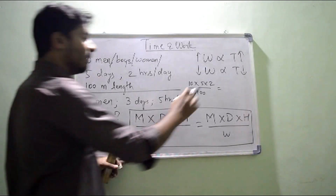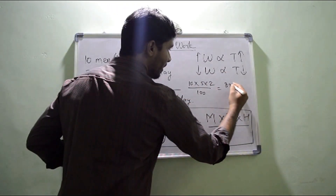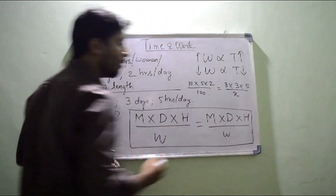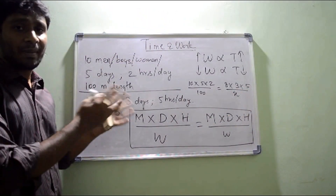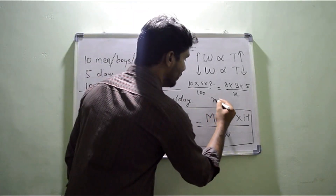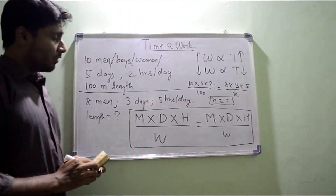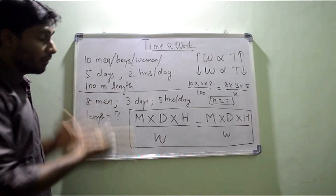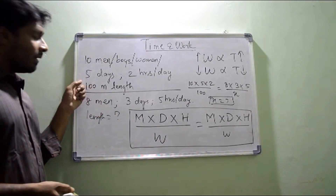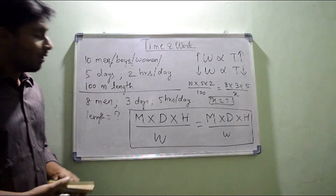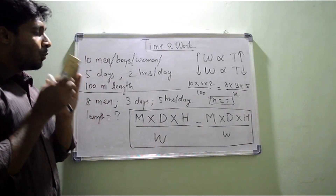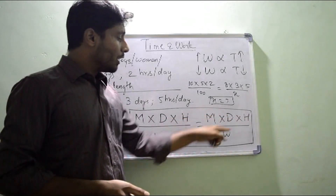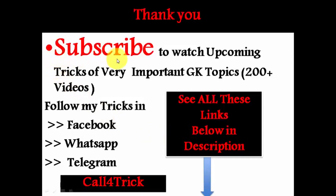To solve this, use the formula: (Men × Days × Hours) / Work = constant for both cases. So: (10 × 5 × 2) / 100 = (8 × 3 × 5) / x. Apply cross multiplication to find x. This formula — Man × Day × Hour divided by Work — is always equal for both sets, and that's all you need for this topic.